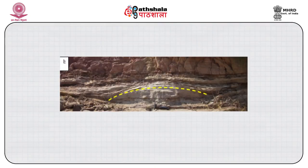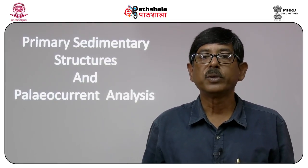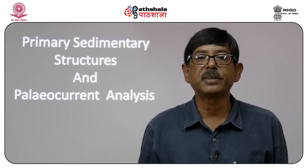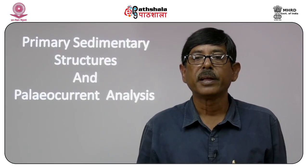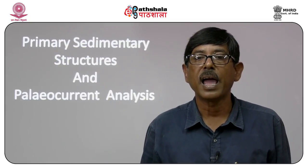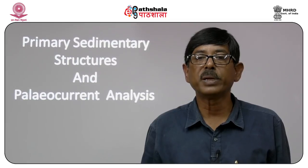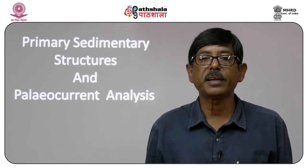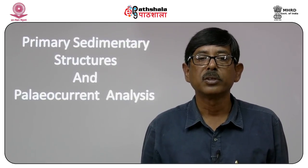Some special bed forms are hummocks and swales. These are undulating bed forms thought to be formed by wave-generated oscillatory flows or combined flows. The bed form shows dome-shaped elevated areas separated by depressions. The lower bounding surface is erosional and undulatory, and sediment drapes over that surface to give an undulatory dome-basin-like appearance. Domed elevated areas are known as hummocks and depressed areas in between are called swales.